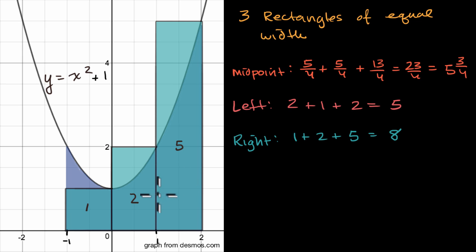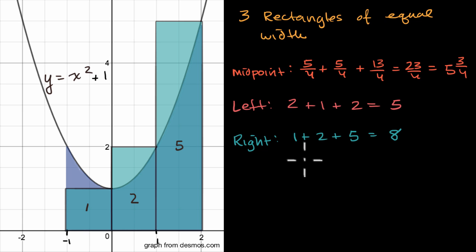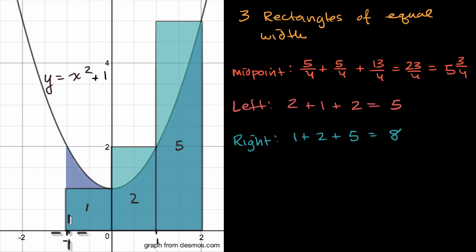Eyeballing this, it looks like we're definitely over-counting more than under-counting, so this looks like an over-approximation. The whole idea here is to appreciate how we can compute these approximations using rectangles. As you can imagine, if we added more rectangles with skinnier and skinnier bases — but still covering the interval from x equals negative one to x equals two — we would get better and better approximations of the true area.